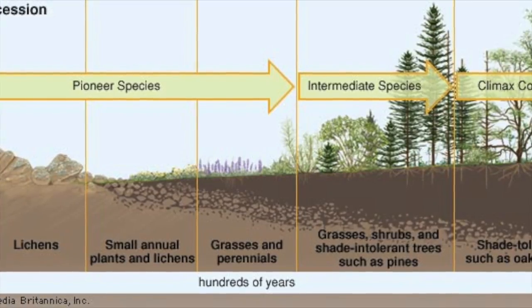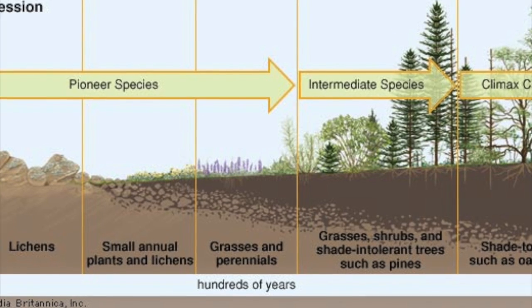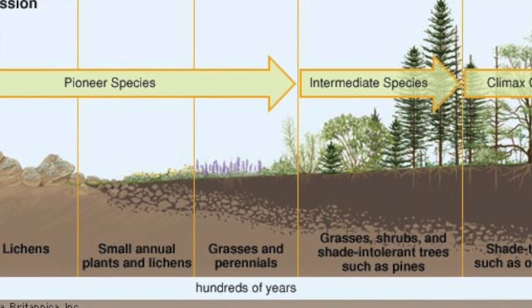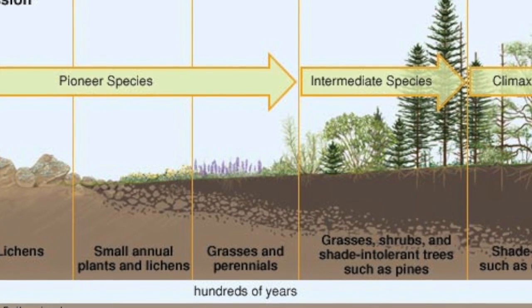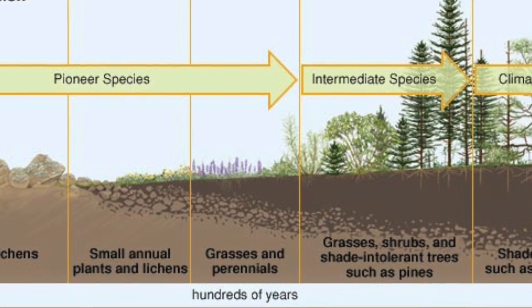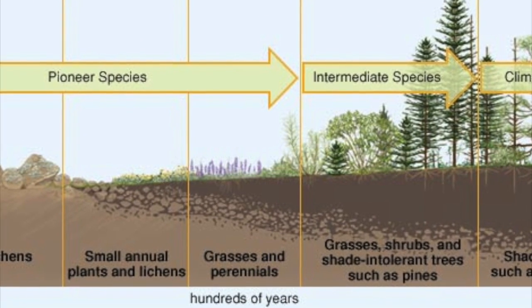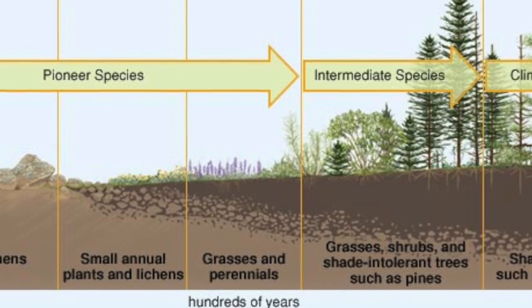Then, primary succession and secondary succession allowed the primitive biome to flourish into the ecosystem that it is today.